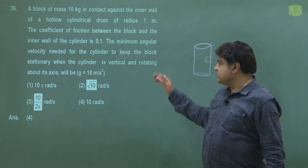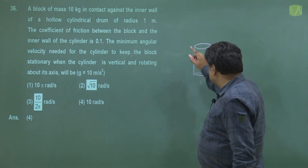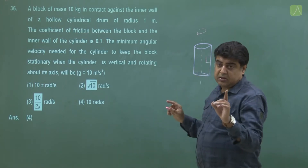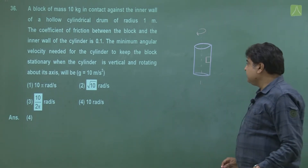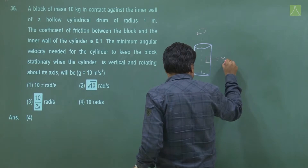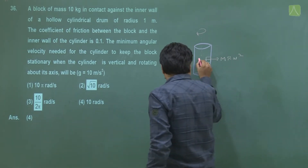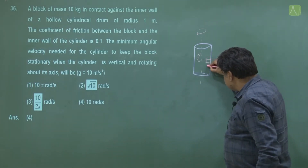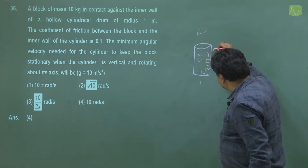Students, in this question we have a cylinder in vertical condition. This is its axis, it's rotating vertically. The question asks for the minimum angular velocity (omega) so that the block does not fall. The block experiences a pseudo force outward: mω²r. The normal reaction acts inward, mg acts downward, and the friction force μN acts upward.